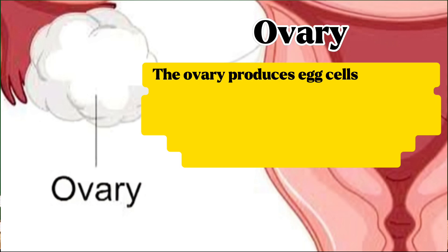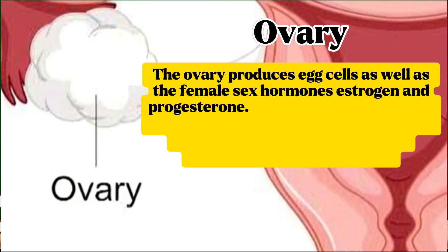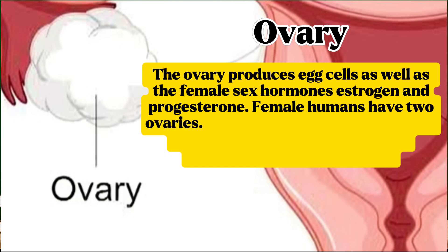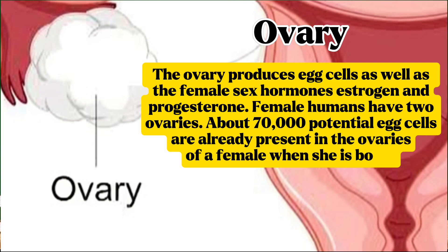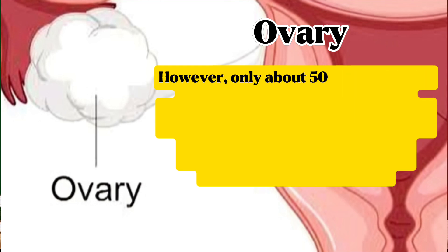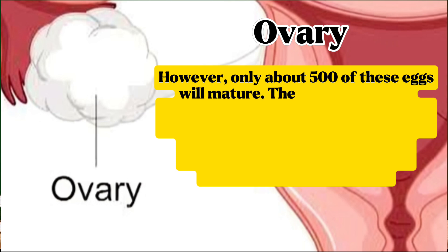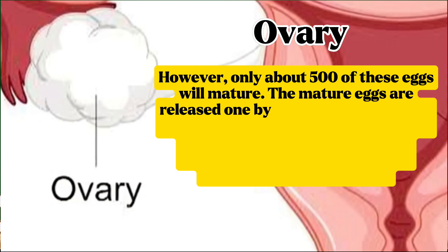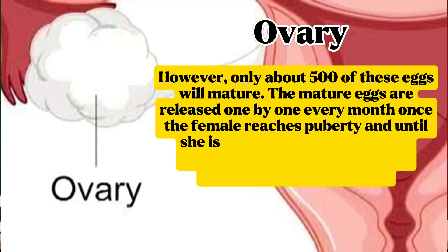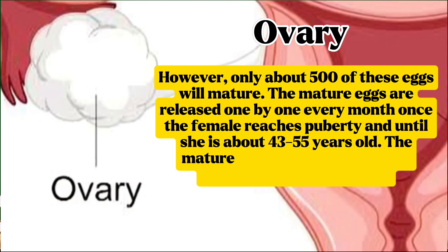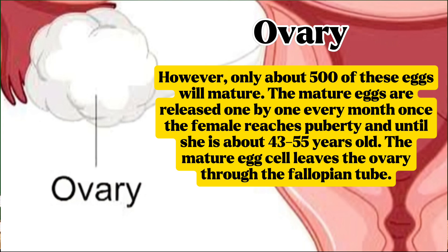Ovary: the ovary produces egg cells as well as the female sex hormones estrogen and progesterone. Female humans have two ovaries. About 70,000 potential egg cells are already present in the ovaries when a female is born; however, only about 500 of these eggs will mature. The mature eggs are released one by one every month once the female reaches puberty and until she is about 43 to 55 years old. The mature egg cell leaves the ovary through the fallopian tube.